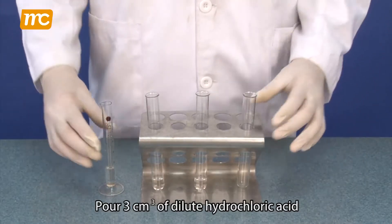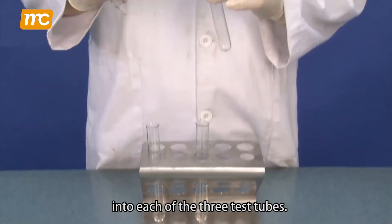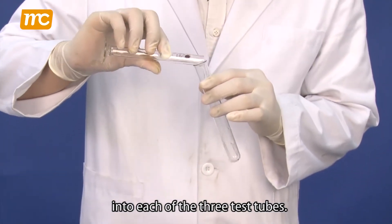Pour 3 cm³ of dilute hydrochloric acid into each of the three test tubes.